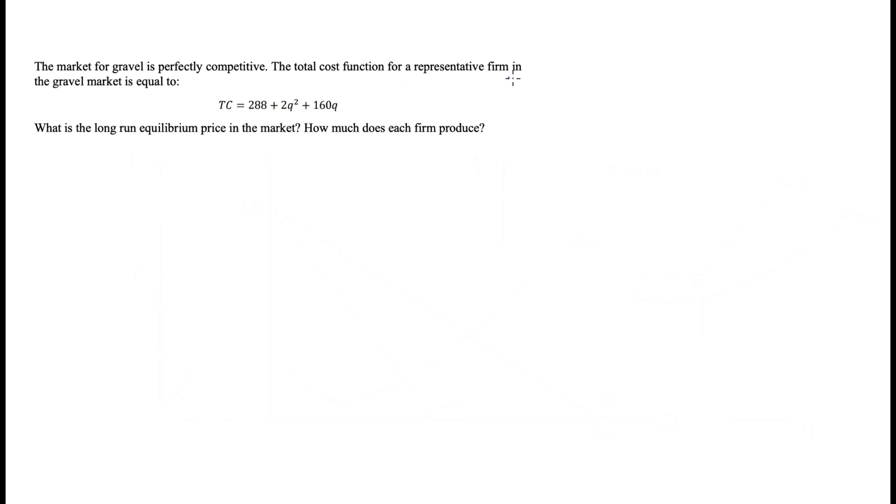cost function for a representative firm in the gravel market is TC equals 288 plus 2 times q squared plus 160 times q, where small q is firm quantity. We're asked: what is the long-run equilibrium price in the market, and how much does each firm produce? In order to answer